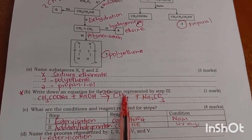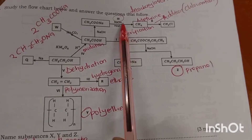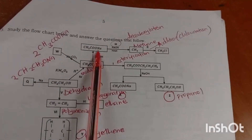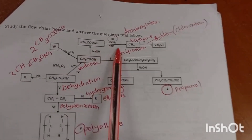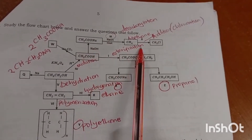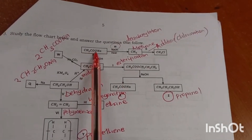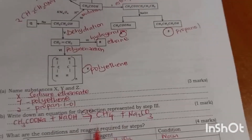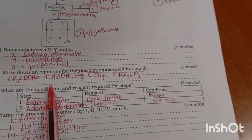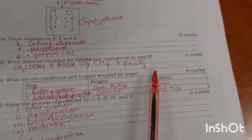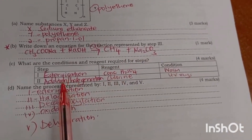Name substances X, Y and Z: X is sodium ethanoate, Y is poly(chloroethene), Z is propan-1-ol. Write the equation for the reaction in step three: sodium ethanoate plus sodium hydroxide gives methane plus sodium carbonate.